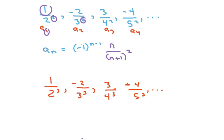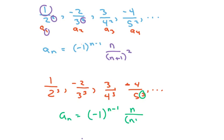The same thing happens with this one. We have a_n with an alternating sign. The index numbers match, but in this case we have cubed. So that's just going to be (-1)^(n-1) · (n+1)³.